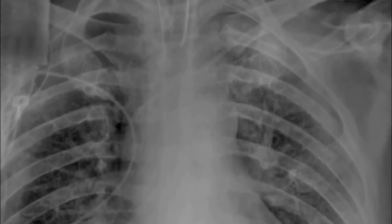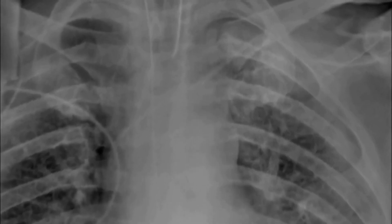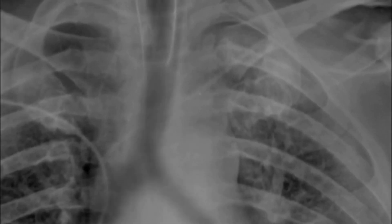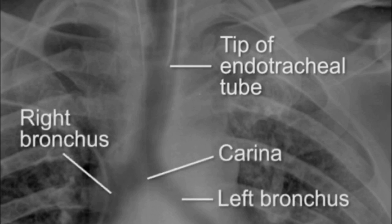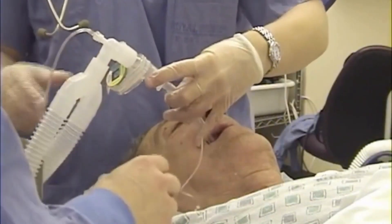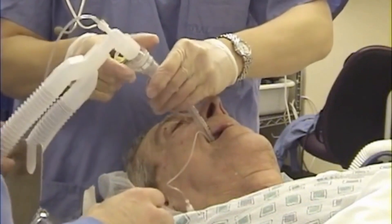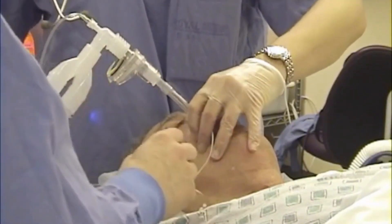Chest radiography is used to assess the patient's pulmonary status after intubation, and to ensure that the tip of the radio-opaque line embedded in the endotracheal tube is well positioned at the level of the mid-trachea and not in either main stem bronchus. Note that radiography cannot be relied upon to detect esophageal intubation. Secure the endotracheal tube to the patient's head once the proper position has been confirmed.